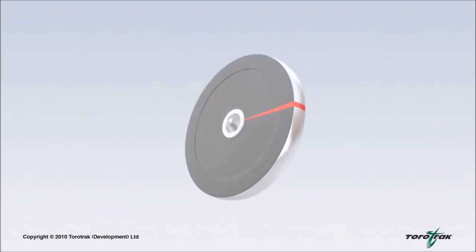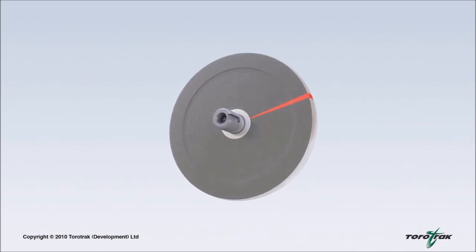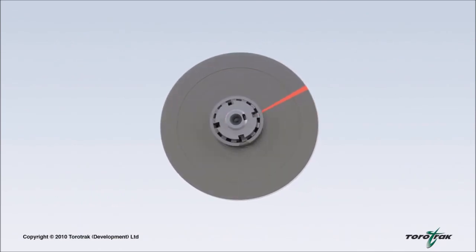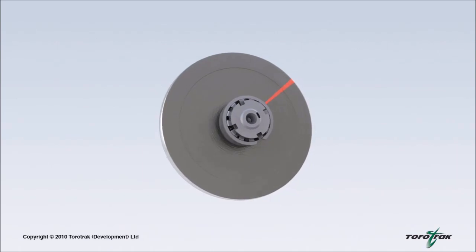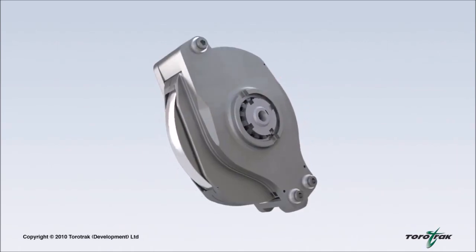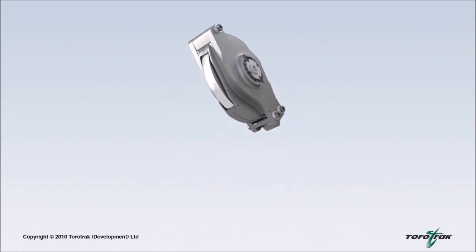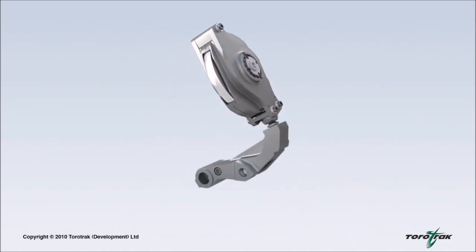The rollers are supported within a mechanism which controls their position as they move within the toroidal cavities. Each roller runs on an axle, mounted on bearings, located in the roller carriage, which in turn is connected to a lever, which pivots around a fulcrum.